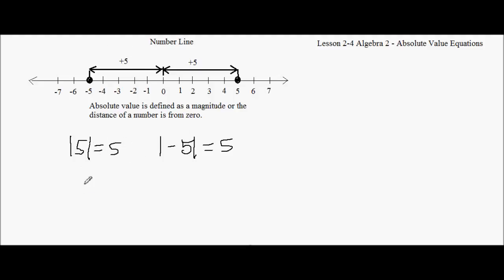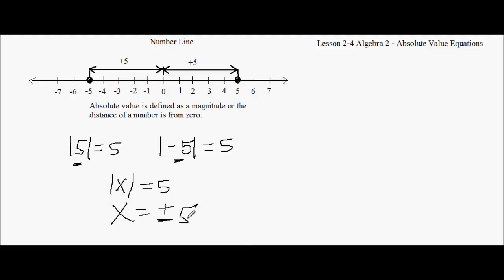So if I have the absolute value of X equals 5, what is X? Well, X could be two things — it could be 5 or it could be negative 5. So we've got two answers: a positive and a negative. Mathematicians are lazy, so instead of writing 5 twice, they write plus or minus 5.